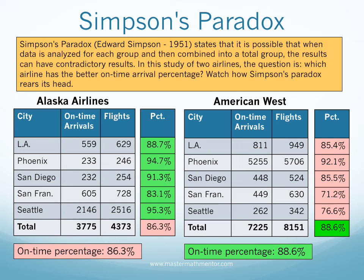Not so fast. We break down the on-time flight percentage for each airline for each city. The results show that for each of the five cities, Alaska Airlines has a higher percentage of on-time arrivals than America West Airlines. If Alaska beats America West in every city in terms of on-time arrival percentage, shouldn't Alaska Airlines have the claim as the better on-time percentage? This is an example of Simpson's paradox, named after Edward Simpson, who discovered it in 1951. It doesn't occur often, but it illustrates that relationships between categorical variables must be examined in detail.